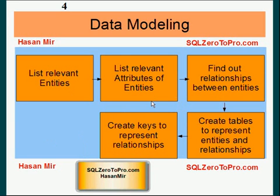Once you have the list of relevant entities and a list of attributes for those entities, then you need to find out what the relationship is between the entities. There could be three relationships: one-to-one, one-to-many, and many-to-many. You need to find out if there is any relationship and if there is, then what kind of relationship it is.